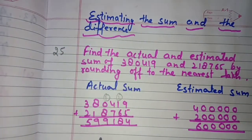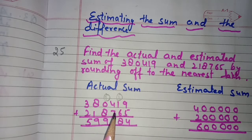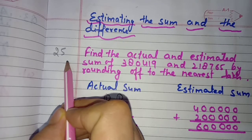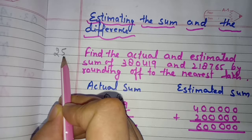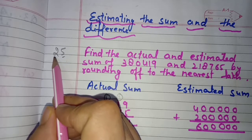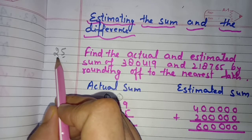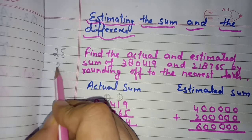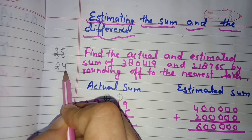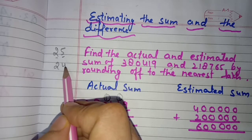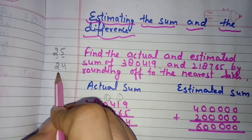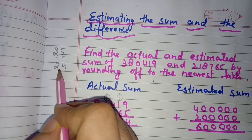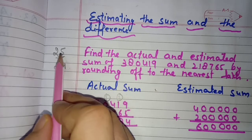When we have to round off a given number to the required place, we always consider the next number to the right side. If this number is 5 or more than 5, the number at the required place is increased by 1, and all the numbers to the right side become zeros. If the number to the right side is less than 5, then the number at the required place remains the same and all the numbers to the right become zeros.